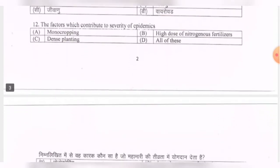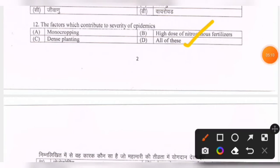Next question: the factors which contribute to severity of epidemics — options are monocropping, high dose of nitrogenous fertilizers, dense planting, all of these. The correct option is D — all of these.